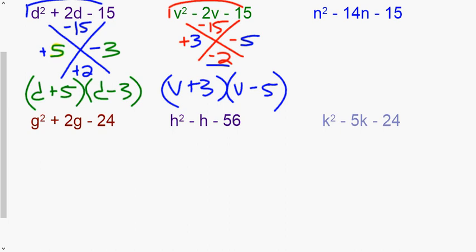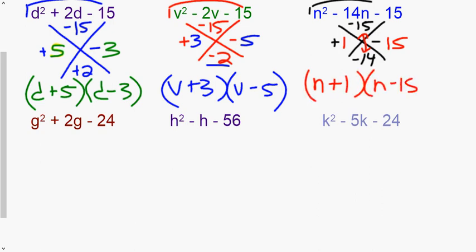Let me do one more example, then you can try the remaining four on your own. Again, using the diamond: 1 times negative 15 on top, b goes on the bottom. Since the top and bottom numbers are one digit apart — 15 and 14 — I'll try 1 and 15. One minus 15 equals negative 14. The variable is n: (n + 1)(n − 15). Go ahead and pause the video and try the remaining three on your own.